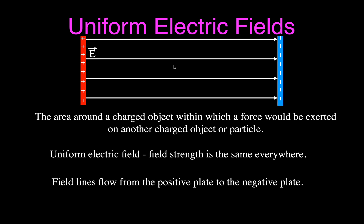The field lines always flow from the positive plate to the negative plate. If I put a positively charged particle in that electric field, it's going to feel a force to the right. That's how we define the direction of the electric field — it's the direction of the force on a positively charged particle. If we put a negatively charged particle, it's going to feel a force in the opposite direction.